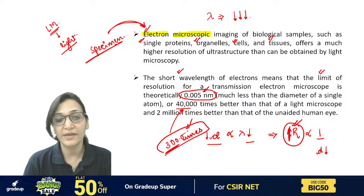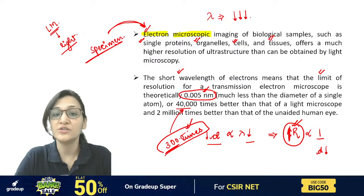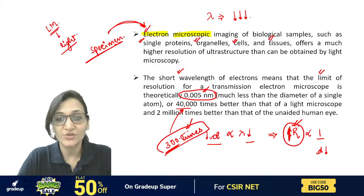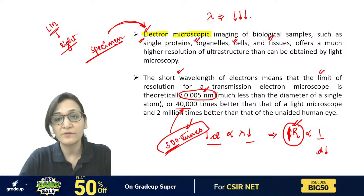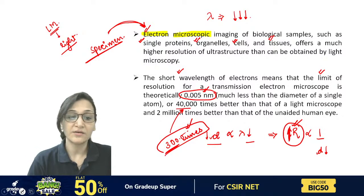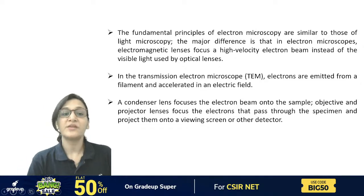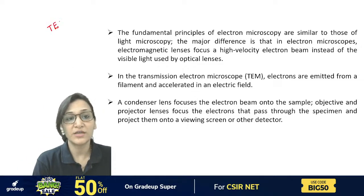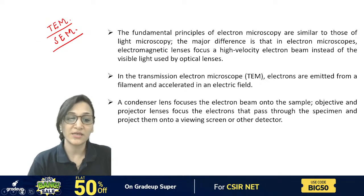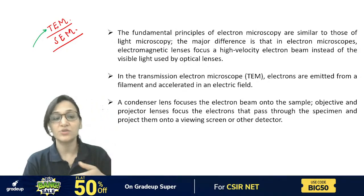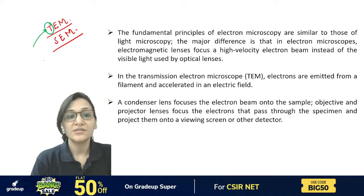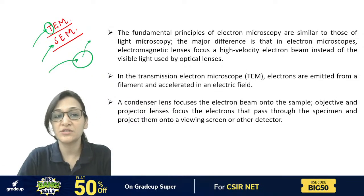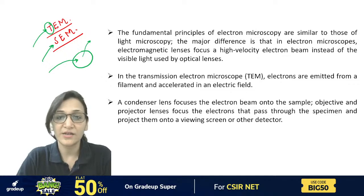Electron microscopy is 300 times better than light microscopy and is preferred for observing internal structures. There are two types of electron microscopy: transmission electron microscopy (TEM) and scanning electron microscopy (SEM). We have understood the introduction of both.